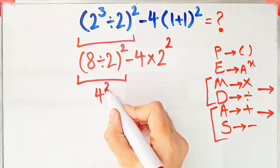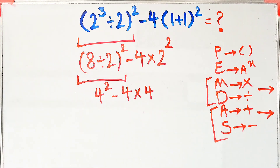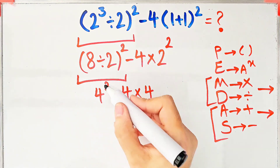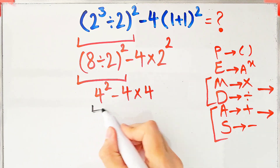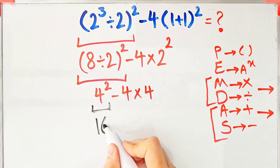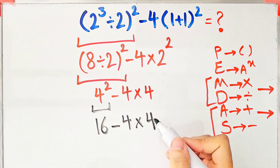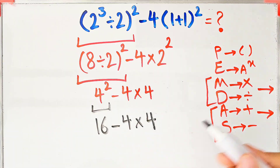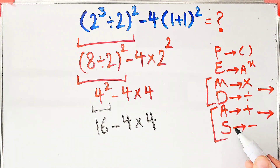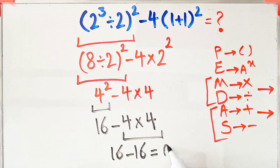We have four to the power of two, minus four, then times two to the power of two, which equals four. Now we have exponent, subtraction, and multiplication. First we simplify the exponents: four to the power of two equals sixteen. We have sixteen minus four, then times four. Multiplication has higher priority than subtraction, so negative four times four equals negative sixteen. Sixteen minus sixteen equals zero — the final answer is zero.